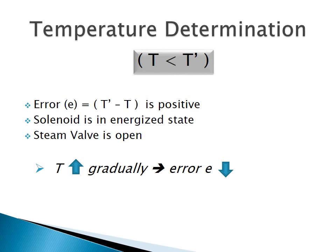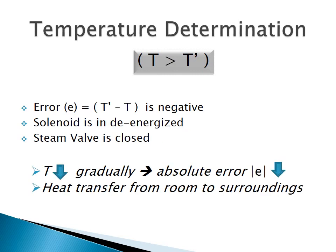The principle of operation of the temperature control system is that the actuator, which contains the solenoid and the steam valve, operates according to one of two possible situations. In situation 1, the controlled variable T assumes a value below the desired temperature T', meaning the error E — the difference between T' and T — is positive. In this situation the solenoid is energized and the steam valve is open. As T gradually increases, the error E decreases. In situation 2, the controlled variable T assumes a value above the desired temperature T', meaning the error E is negative. In this situation the solenoid is de-energized and the steam valve is closed. As T gradually decreases, the absolute error also decreases. This happens because of heat transfer from the room to the colder surroundings.